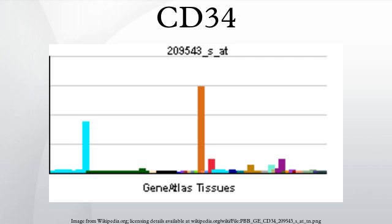It is important to mention that long-term hematopoietic stem cells (LTHSCs) in mice and humans are the hematopoietic cells with the greatest self-renewal capacity. Human HSCs express the CD34 marker, but mouse HSCs do not express the CD34 marker.